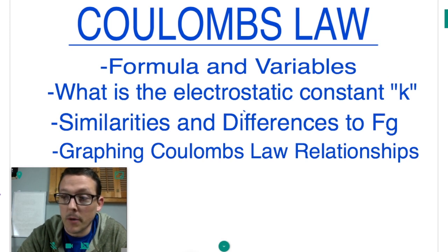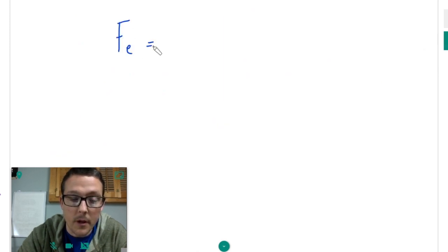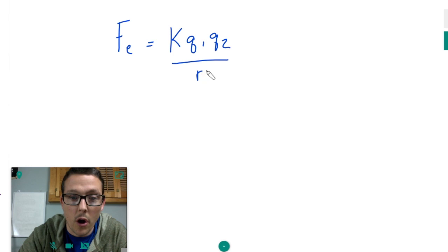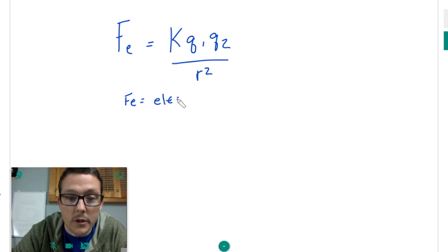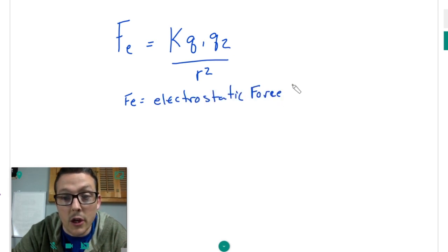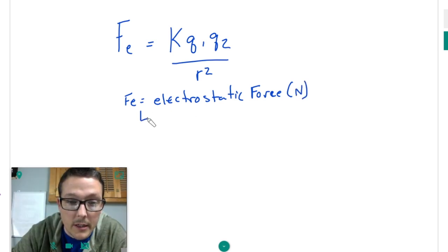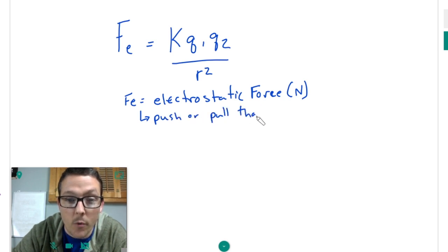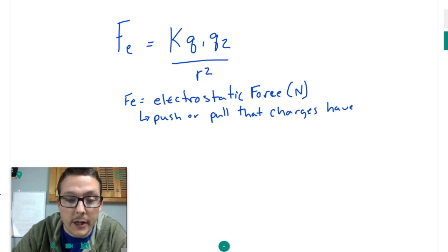So first, let's just jump right into what the formula is and the different variables associated with it. Coulomb's Law is shown by FE equals k, q1, q2 over r squared. Now what FE is, is the electrostatic force. And because it is a force, it has a unit of newtons. And what this force is, is it's the push or pull that charges have on one another. But in electrostatics, we don't call them pushes or pulls. We say there is either an attraction or a repel.